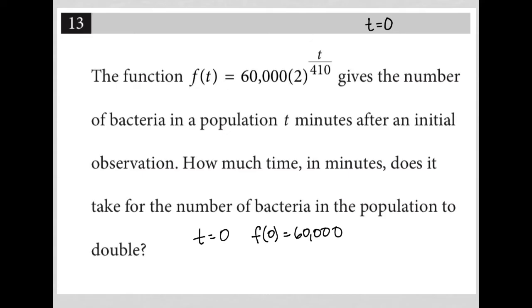It looks like as long as I can multiply 60,000 times 2, I'll be at 120,000. So what does t have to be here in order for me to have 60,000 times 2? Well, if t were 410, then that would be 410 over 410, which equals 1. 2 to the 1st power equals 2. And 60,000 times 2 gives me 120,000, which would be a double.